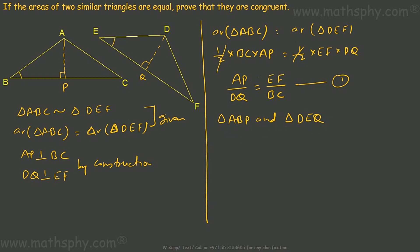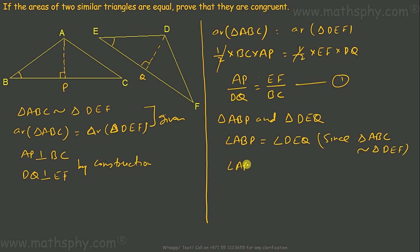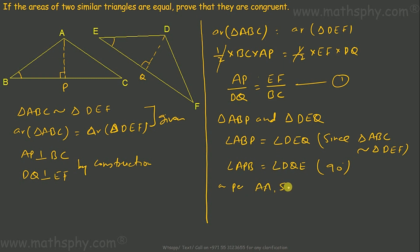Now consider triangles ABP and DEQ. In these two triangles, angle ABP equals angle DEQ, since triangle ABC is similar to triangle DEF. Also, angle APB and angle DQE are both right angles. So by angle-angle similarity, since two angles are equal, the third angle will also be equal.